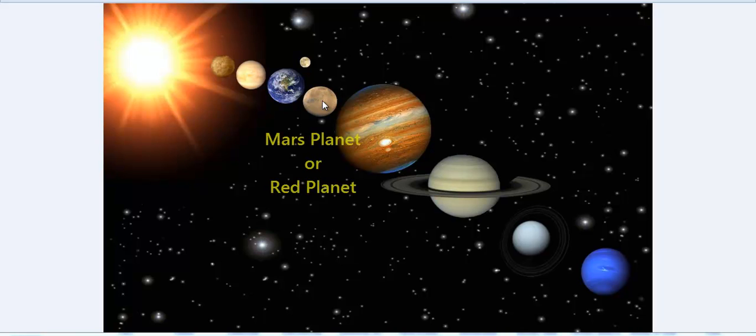And now, about the red planet, that is the Mars. It is seen as reddest object in the sky. So it is commonly known as the red planet and it has two satellites. Thank you.